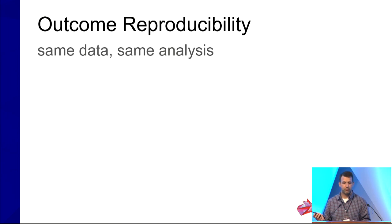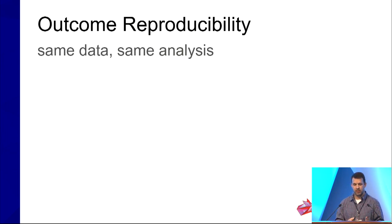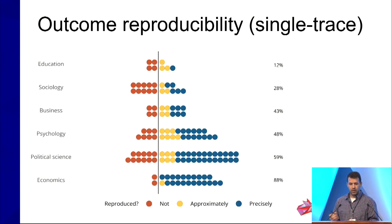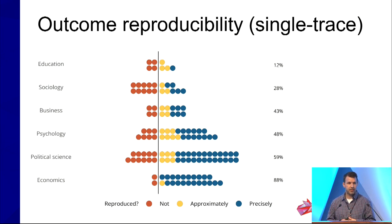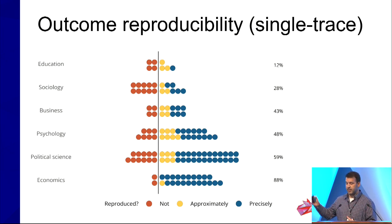The first one I'm going to show you is outcome reproducibility. What I mean is I want the same data that was used in the original claim, analyzed the same way — so hopefully analytical data and code, but there are other ways to get there. This is what we found with the single-trace approach across disciplines: over 150 reproductions. We looked at whether they precisely reproduced key aspects from the original paper, whether they didn't, or whether they were approximate — within a 15% degree of error. Across the board, we don't see any 100% reproducibility occurring.